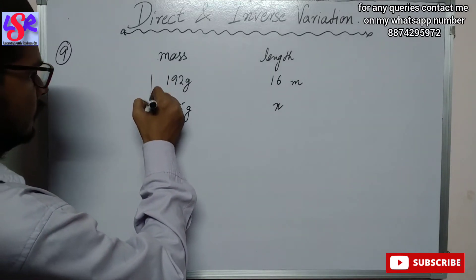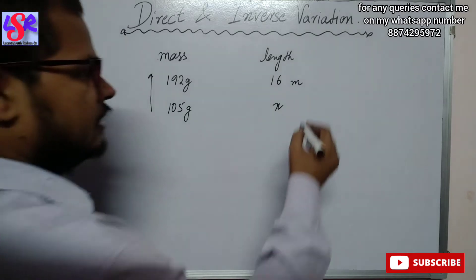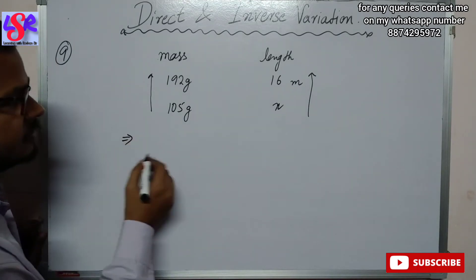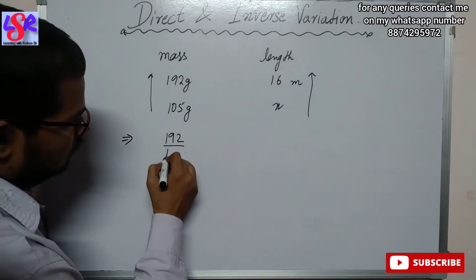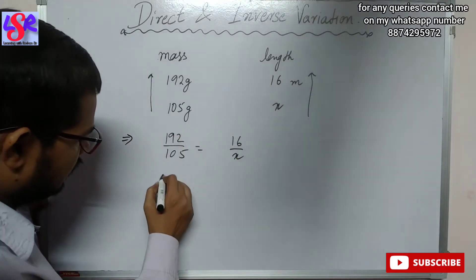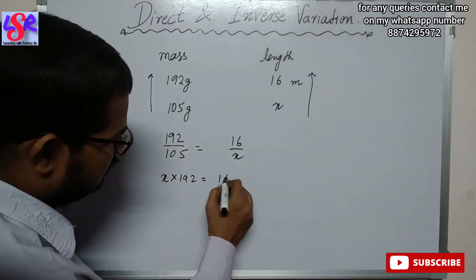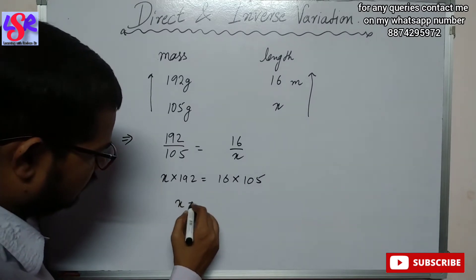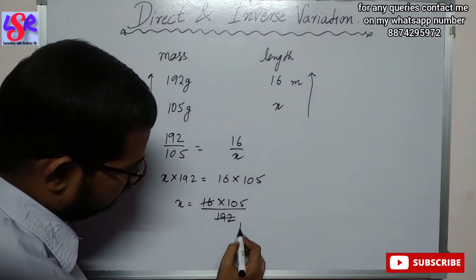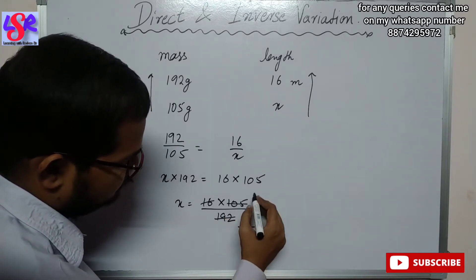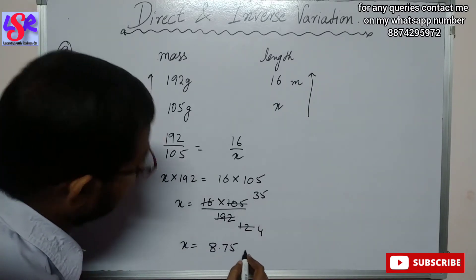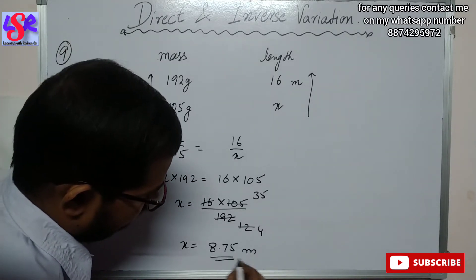We put the arrow in this direction because 192 is greater and 105 is smaller, and this is a direct variation. We write: 192 upon 105 equals to 16 upon x. Doing cross multiplication: x into 192 equals to 16 into 105, so x equals to 16 into 105 upon 192. Simplifying — 16 divides 12 times, then 4 times — x equals to 8.75 meter as the length of the rod.